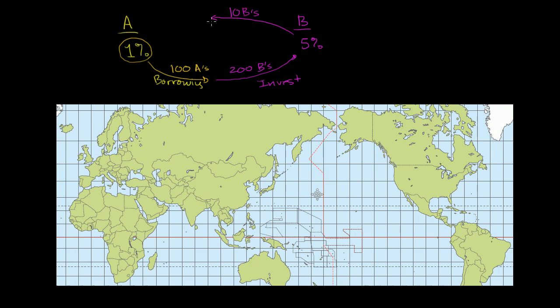And then they can convert those 10 B's, if we assume the exchange rate holds constant, and that is a big assumption, they can convert that to 5 A's based on the same exchange rate. But they only have to pay 1 A in interest.